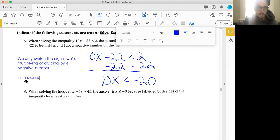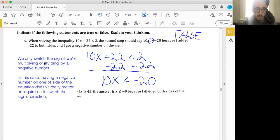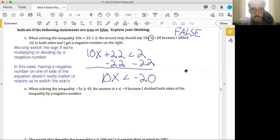And we made a note of this before. And I'll reiterate it here is that we only switch the sign if we're multiplying or dividing by a negative number. In this case, having a negative number on one side of the equation doesn't really matter or require us to switch the sign direction. And of course, we're talking sign direction. So what I have here is correct. This works just fine. But originally, they were saying that it should be switched. And that's false. You don't need to do that. Take a moment, try six.